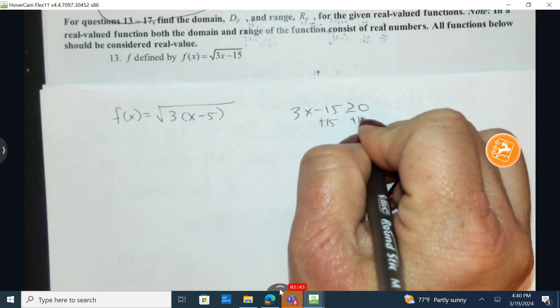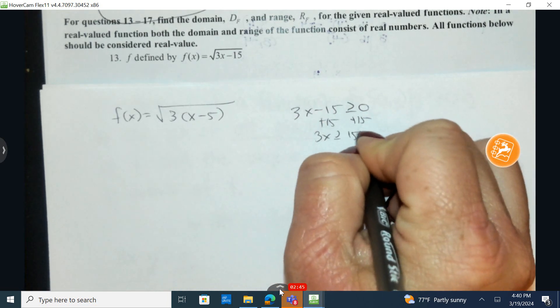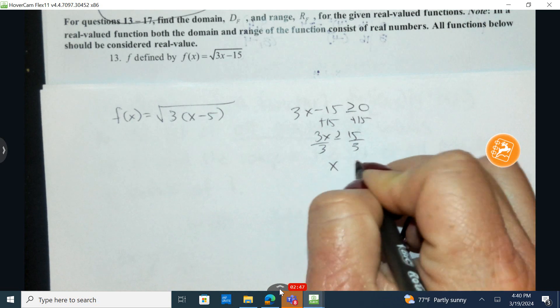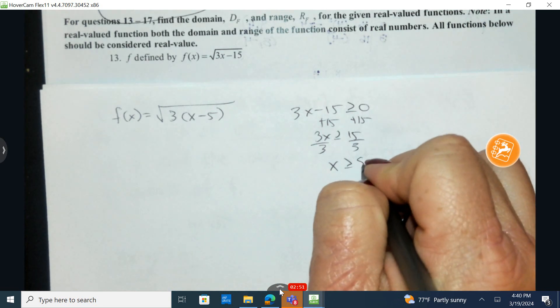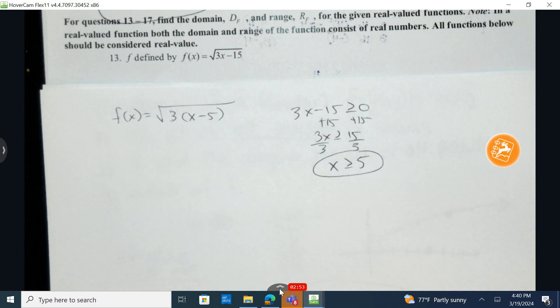When I solve that, I'm going to add 15 to both sides, I get 3x is greater than or equal to 15, divide by three, and all x values for this function, the inputs, the x values have to be greater than or equal to five.